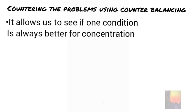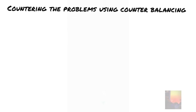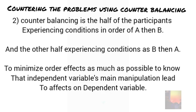Doing this allows us to see if one condition is always better for concentration or another. So in summary, counterbalancing is half of the participants experiencing conditions in order of A and then B and the other half experiencing conditions as B and then A.